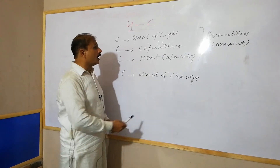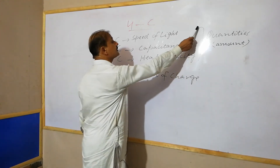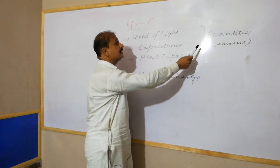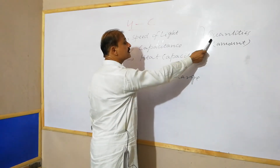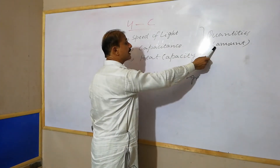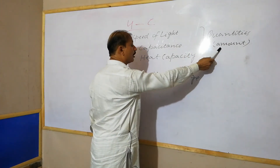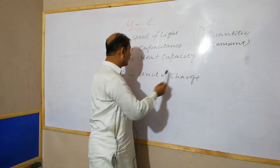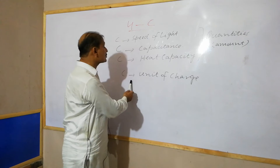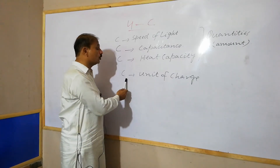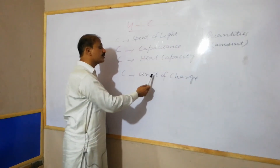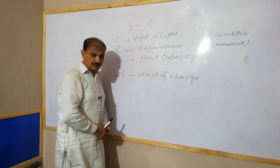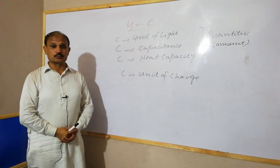The first three are quantities — they tell us about an amount. The fourth C, the Coulomb, is the unit of charge. Thank you.